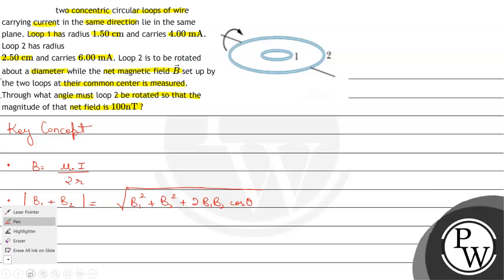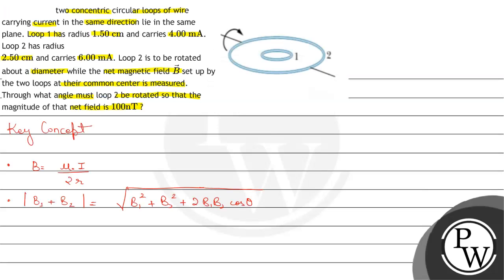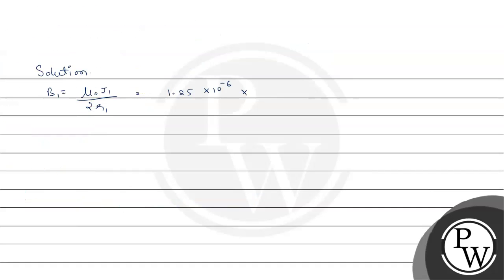Now let's solve our question and find the solution. So for solution part we have B1 we can find out B1 is equal to mu naught into i1 upon 2 into r1. So it will be equal to 1.25 into 10 to the power minus 6 into what is i1? i1 is given to us as 4 milliampere. So we will convert it to ampere.